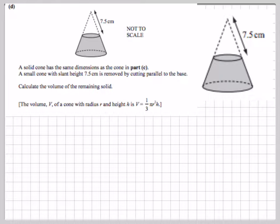Calculate the volume of the remaining solid. The volume of a cone with radius r and height h is 1 third pi r squared h. The volume of the shaded bit will be the total volume of the cone minus the volume of the small cone at the top, which has been removed.